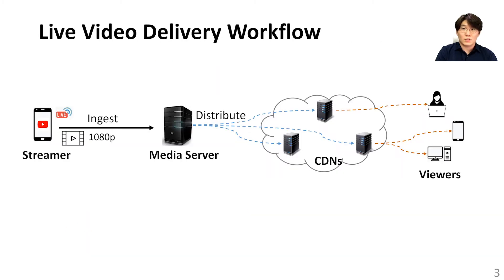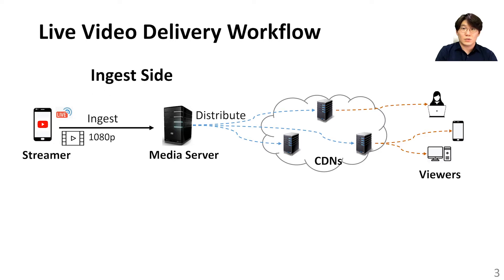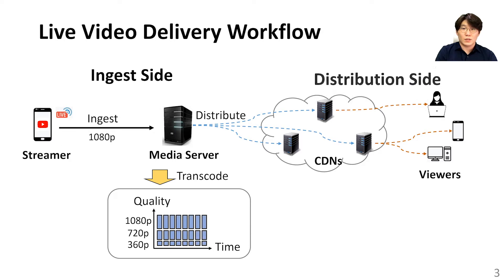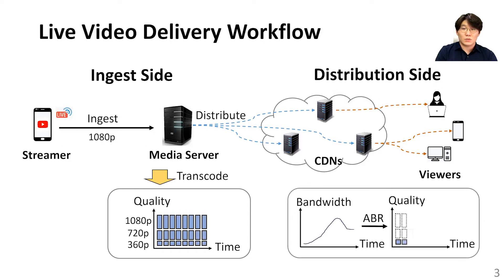Live streaming systems consist of two main components. First, the ingest side concerns the delivery of live video from the original streamer to a media server. When the streamer uploads the high-quality live video to the media server, the media server transcodes the ingest stream into video chunks with multiple different low qualities. Second, at the distribution side, content distribution servers use adaptive bitrate streaming to optimize quality of experience and scale across thousands of concurrent viewers.